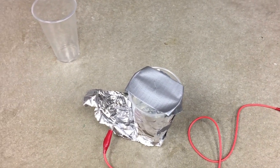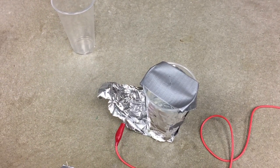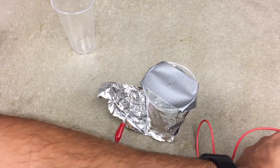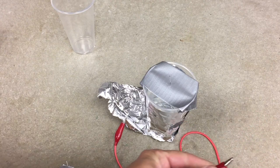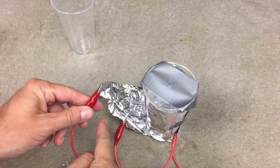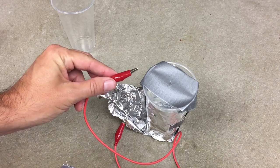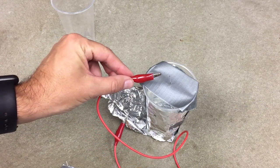Now let's see if we can see a spark. I'm going to disconnect my wire. Now I'm going to bring this wire to the paper clip so it can discharge through itself. Let's see if we can see a spark.